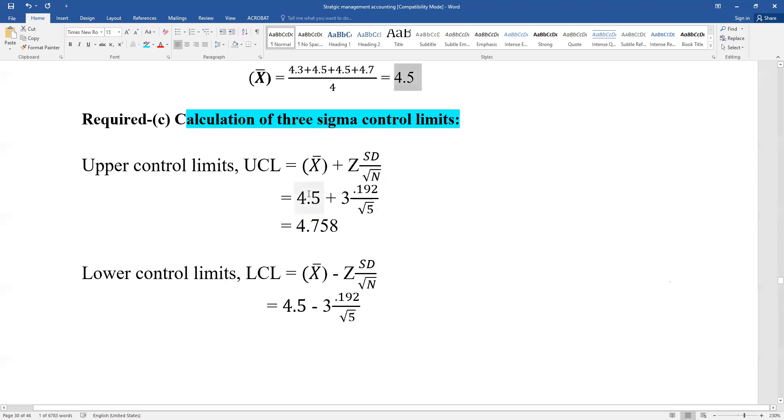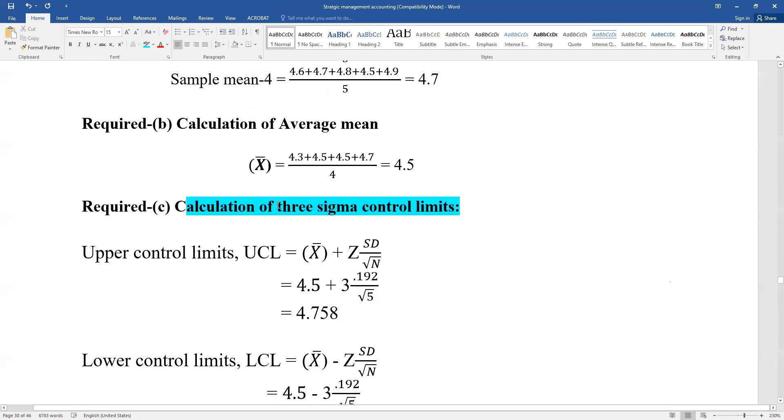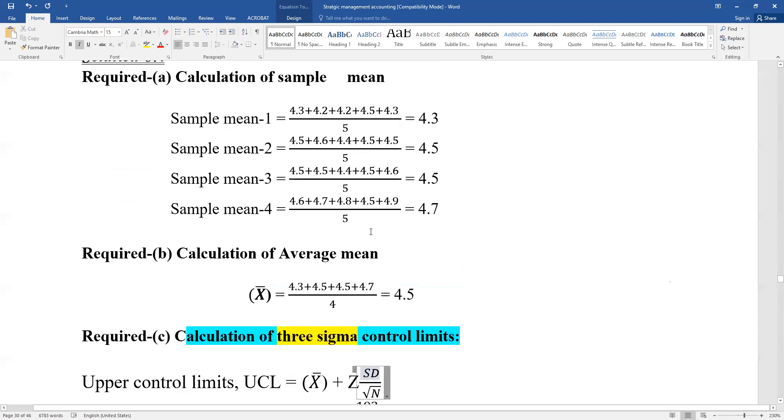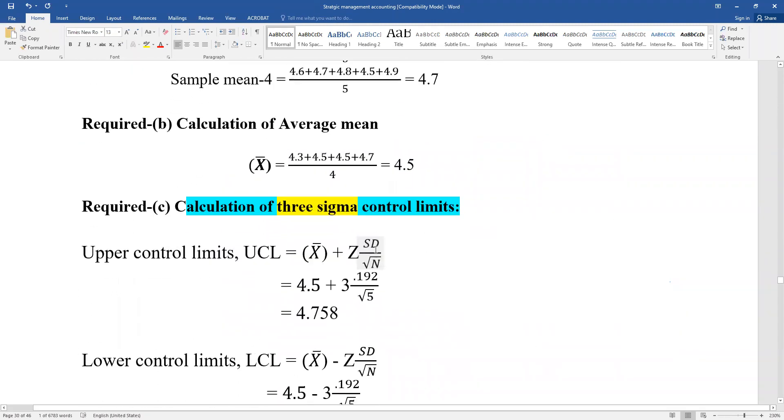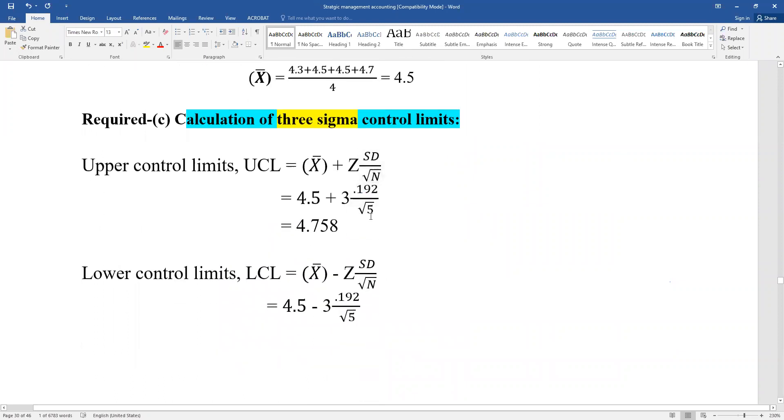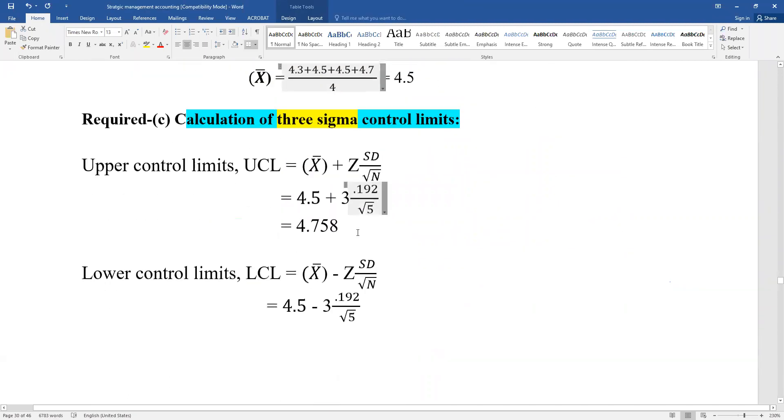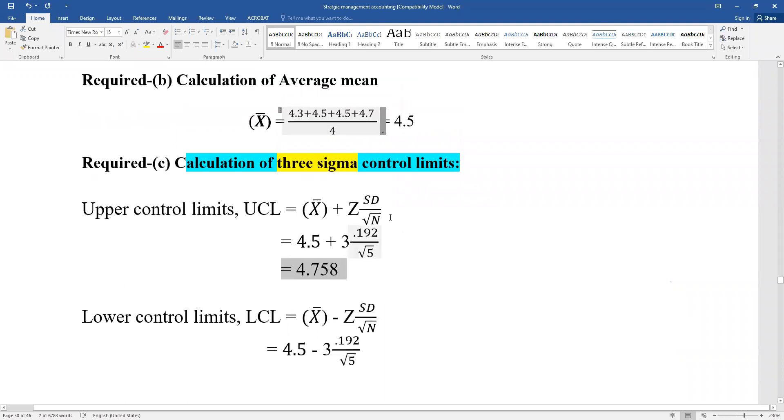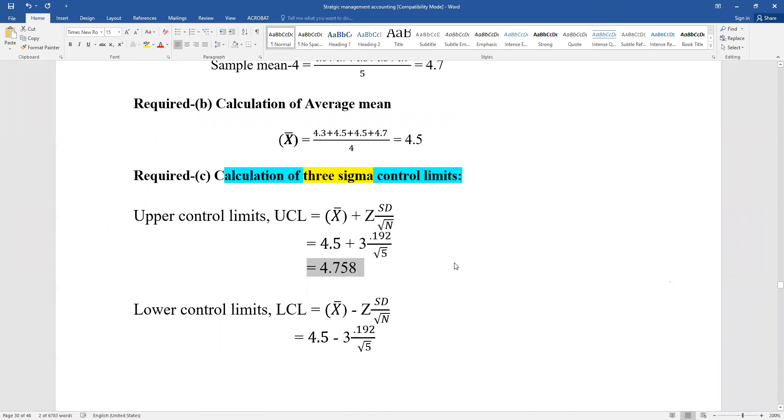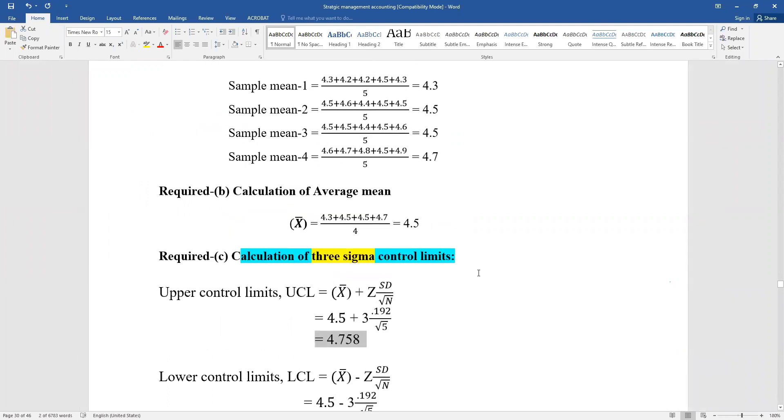X-bar equals 4.5, plus three times sigma. Three sigma, that means three. The sigma is 1.92. For UCL upper control limit, and lower control limit it's the same formula but minus. The calculation gives UCL.